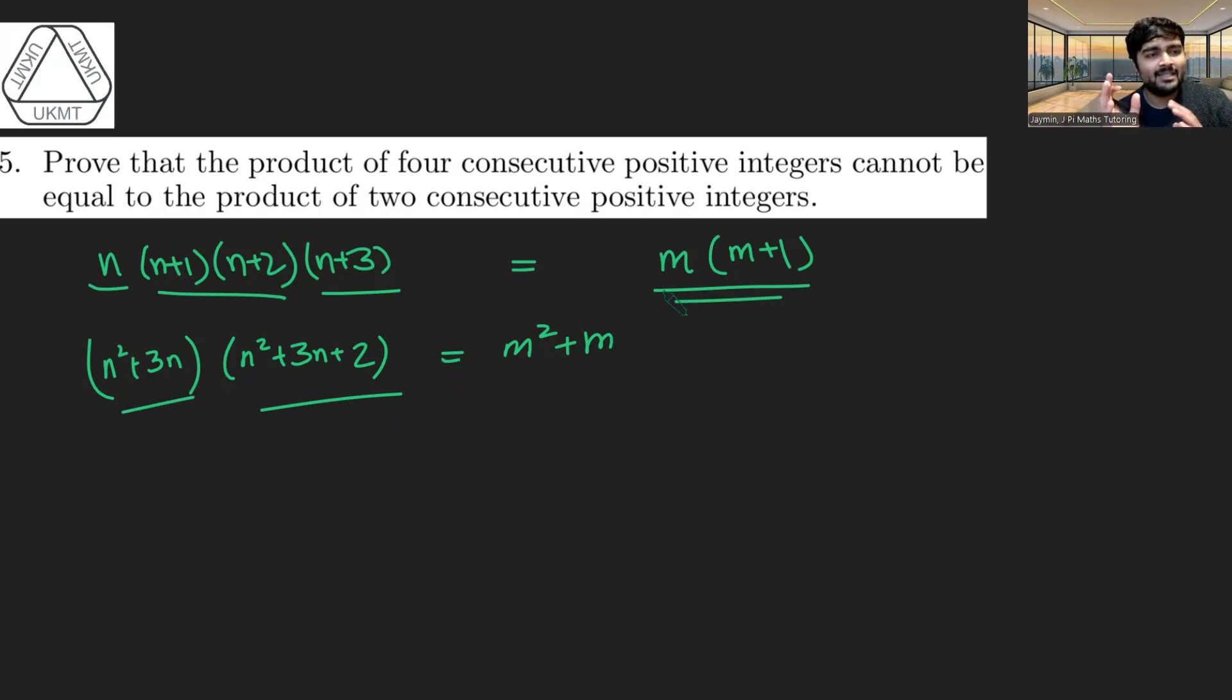If you do 5 times 6, that can't be the same as, well, it's 30. It can't be the same as the product of two numbers which are two apart, surely. How do we prove this?